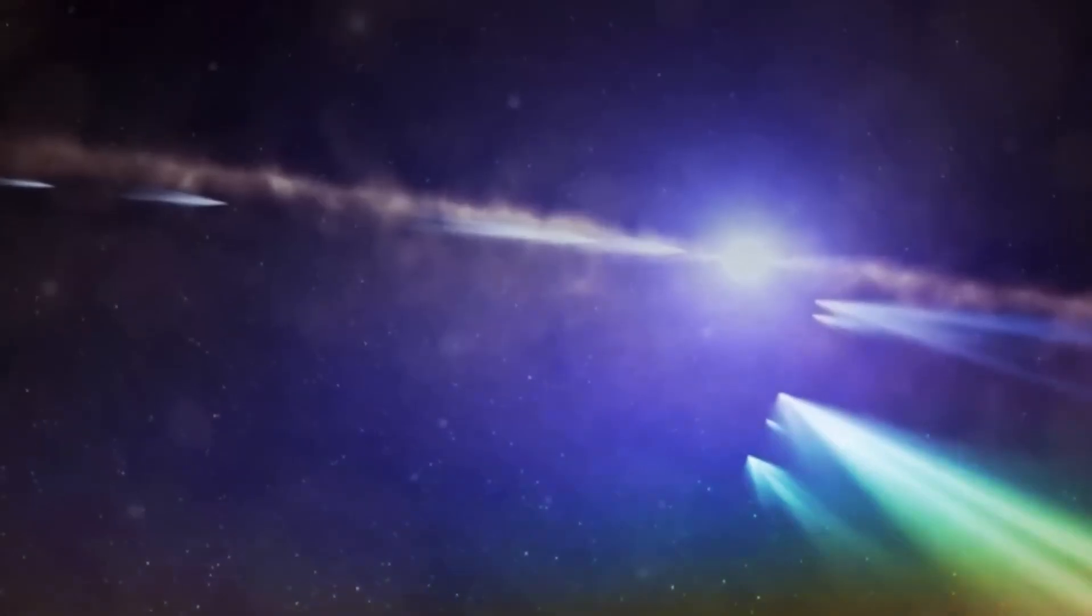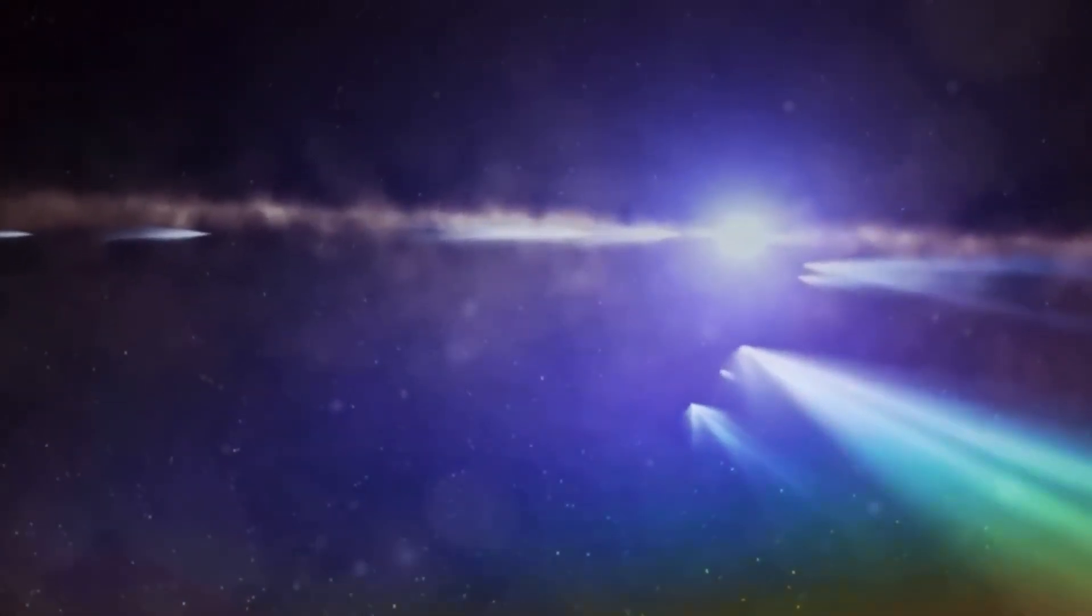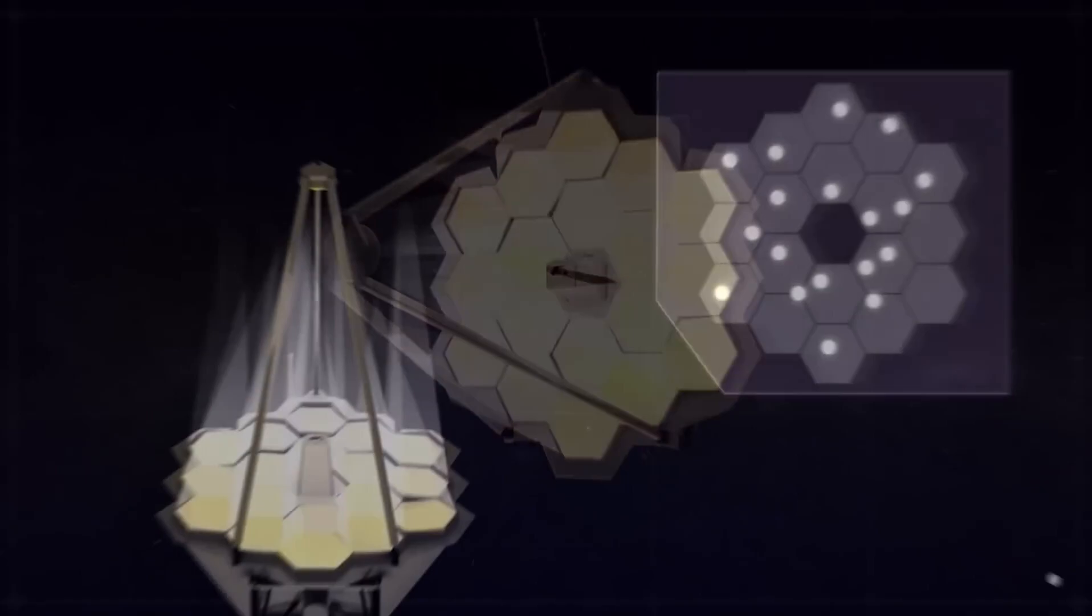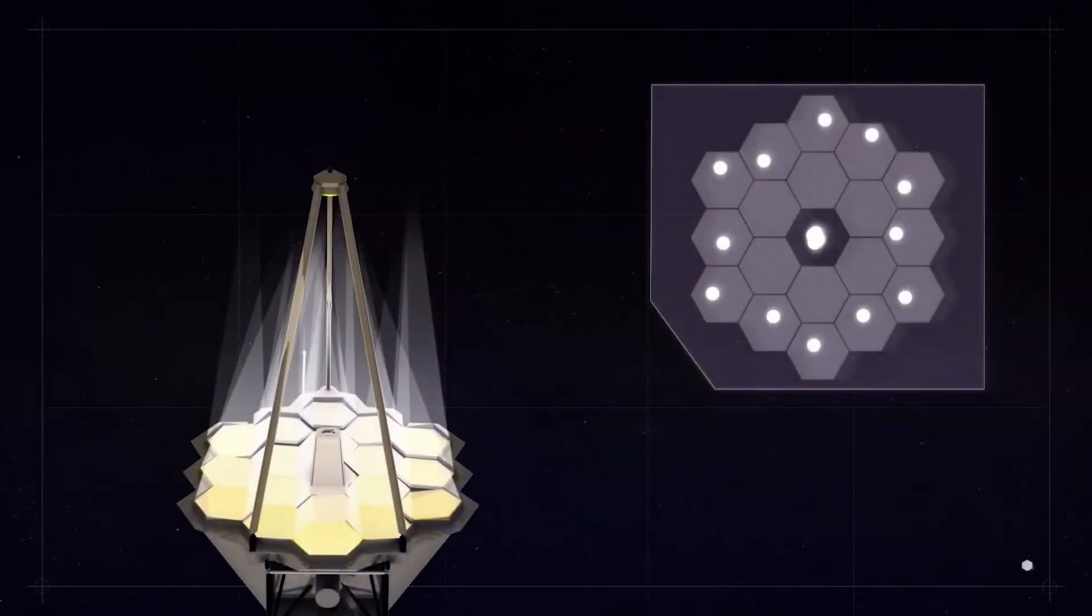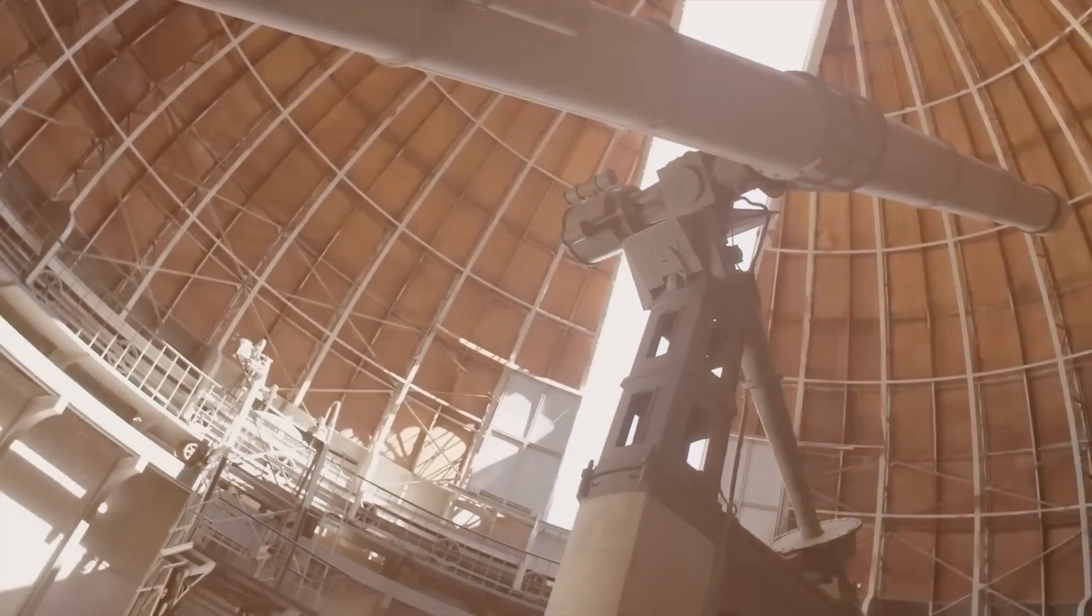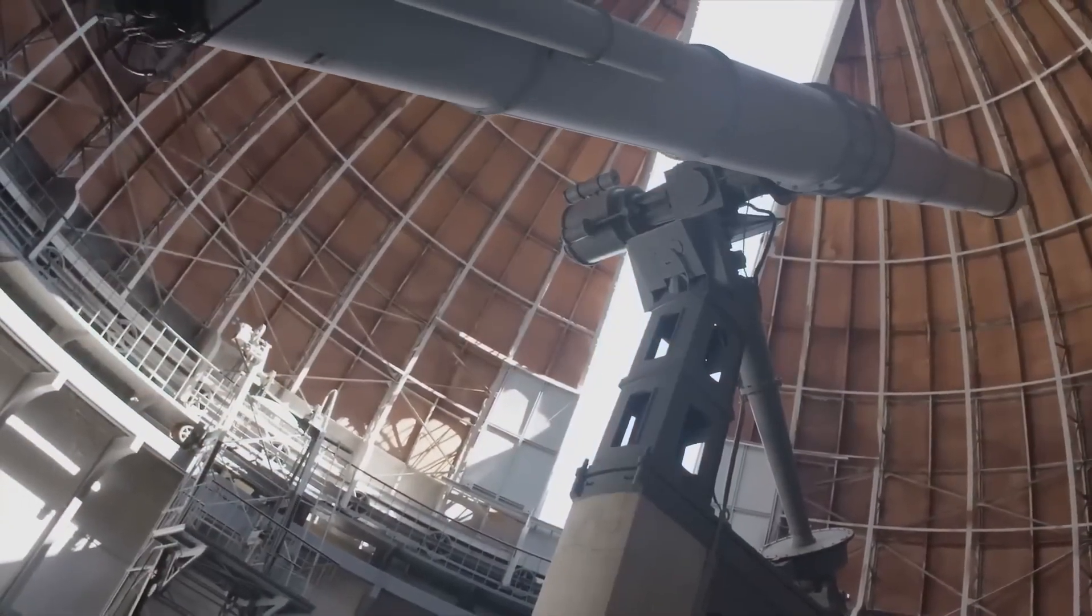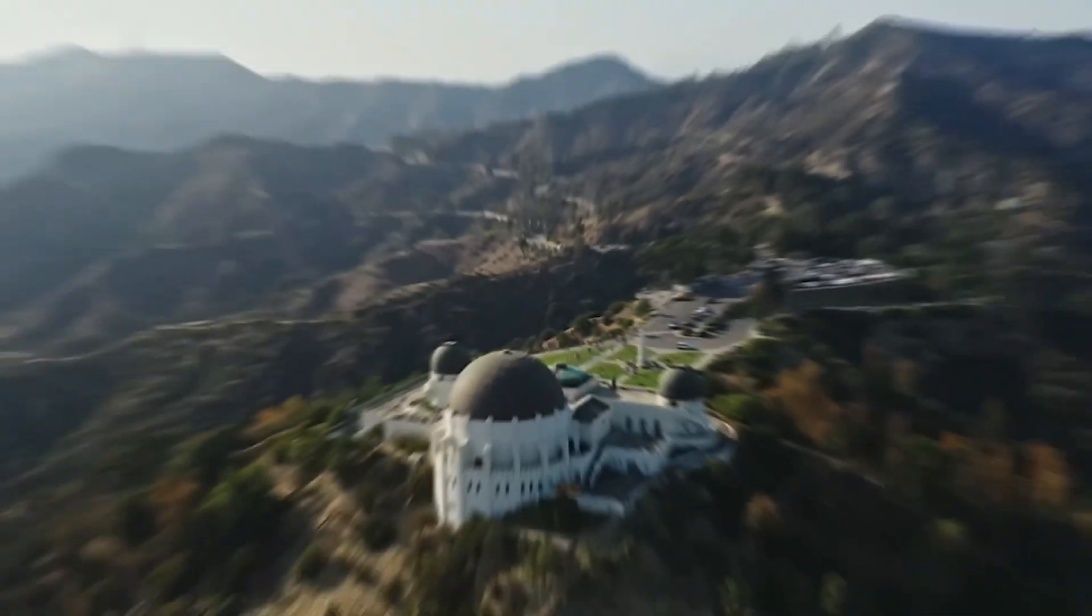There are moments in history when the universe seems to whisper a warning, and this might be one of them. The James Webb Space Telescope has just done something extraordinary. It captured the first real image of an object that could change everything we know about our place in the cosmos.